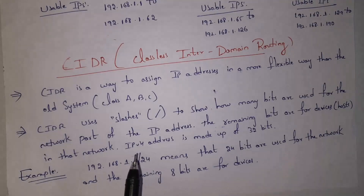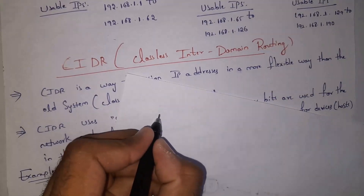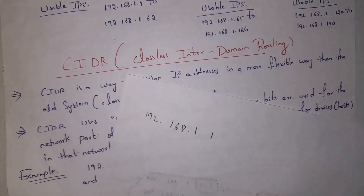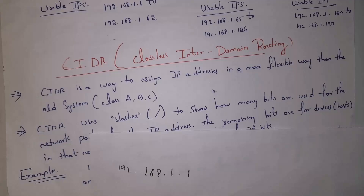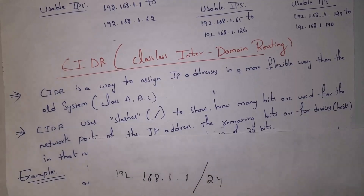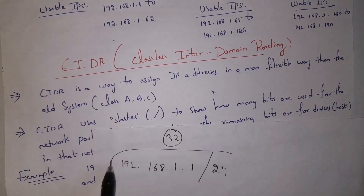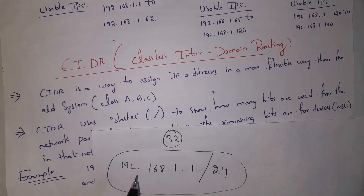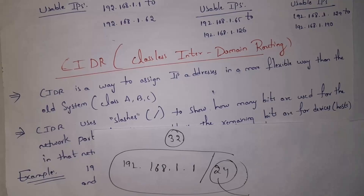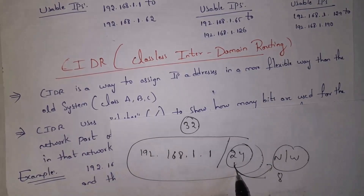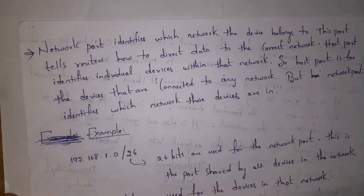An IPv4 address is made up of 32 bits. For example, normally you write an IP address like 192.168.1.1, but with CIDR you write 192.168.1.1/24. The /24 means 24 bits are used for the network part, and the remaining 8 bits are given to the host part. The network part is used to identify the network, and the host part is used to identify individual devices within the network.